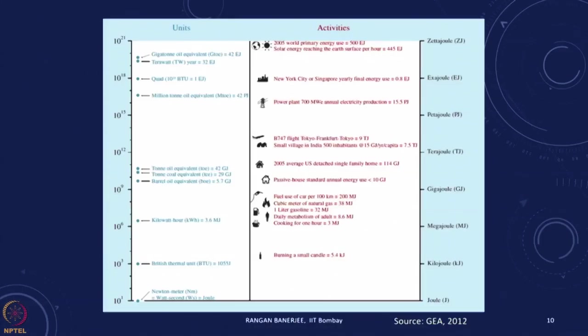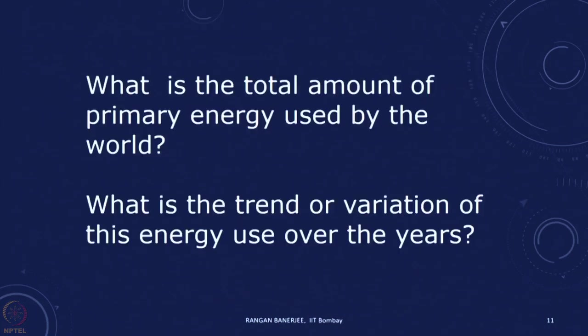You can look at this on a chart axis from the Global Energy Assessment, which shows different activities in different units on a scale going from 10¹ to 10²³ joules — from joule up to zettajoule and exajoule — giving you an idea of the relative magnitudes of energy use. This is very similar to the exercise we just completed.